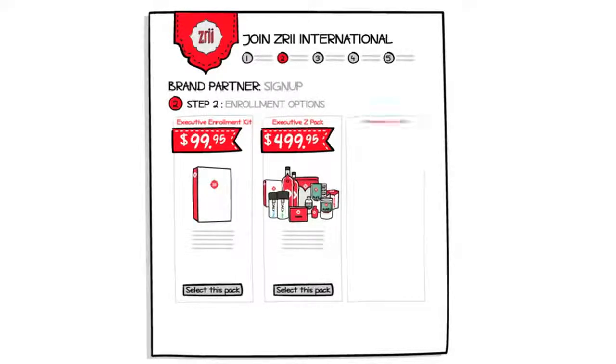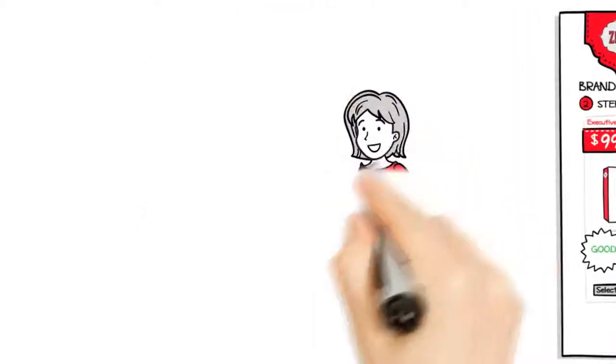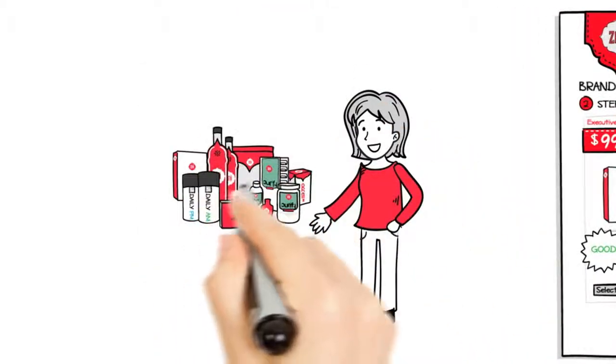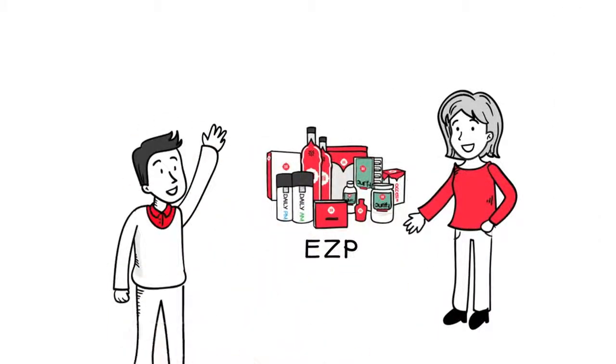At Zree, we have three simple enrollment options, which we lovingly refer to as good, better, best. Nora, for example, started her new business by purchasing an Executive Z-Pack, or EZP for short. Executive Z-Packs are the better in the good, better, best model. And as you've seen, they can be a great start on your path to success.